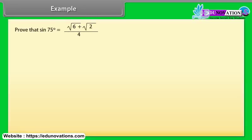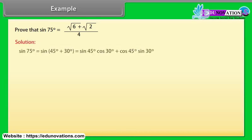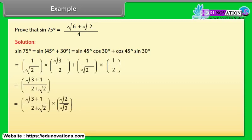Example: Prove that sin 75° = (√6 + √2)/4. Solution: sin 75° = sin(45° + 30°) = sin 45° cos 30° + cos 45° sin 30°. By solving this, we get (√6 + √2)/4.